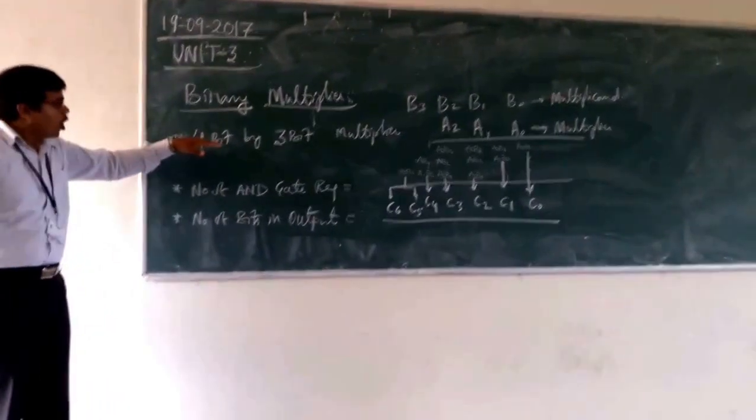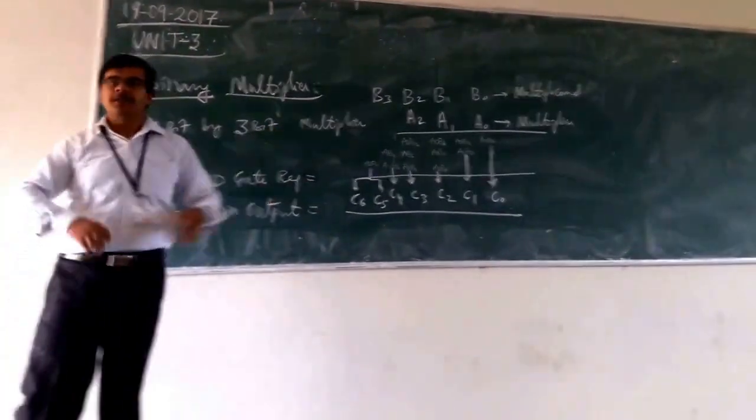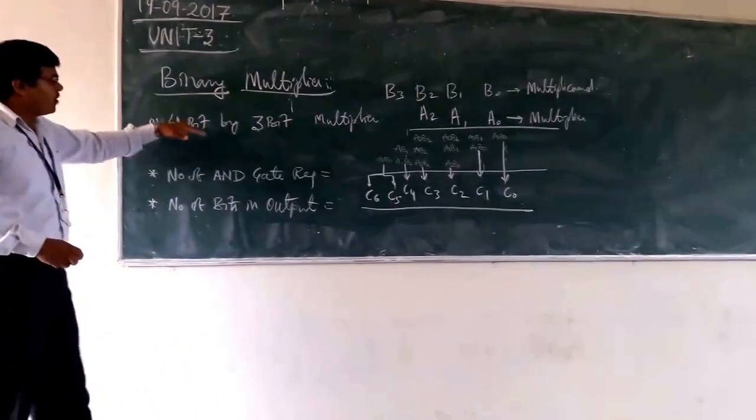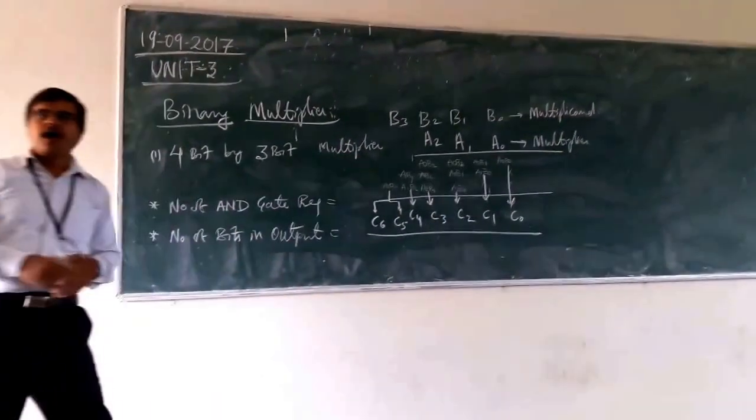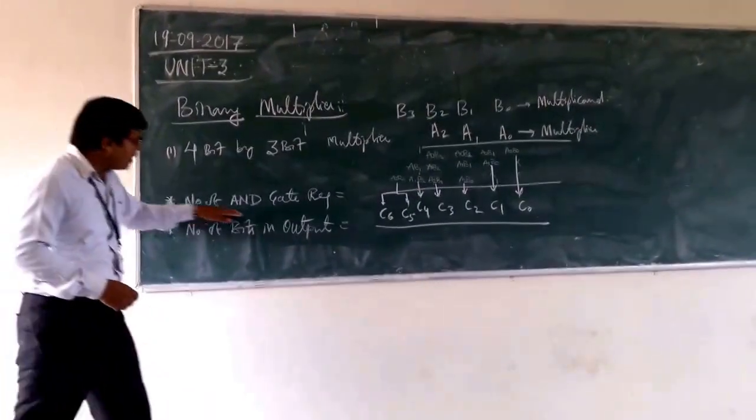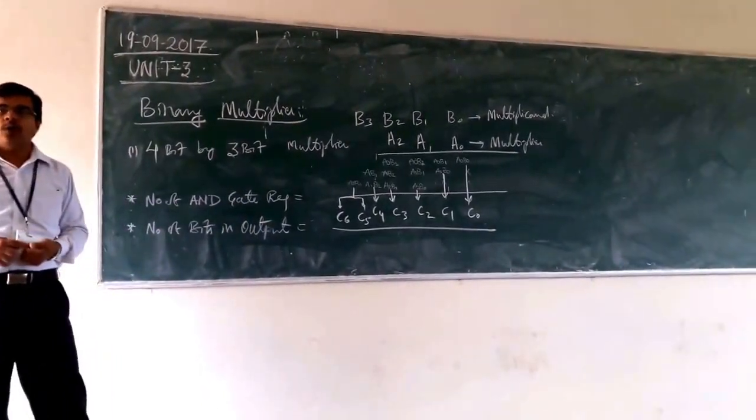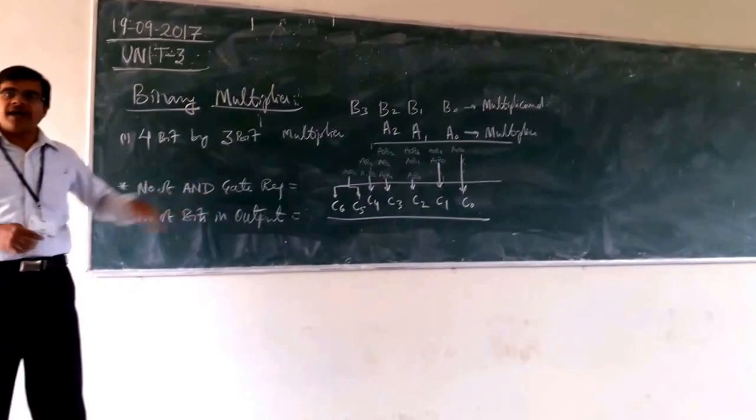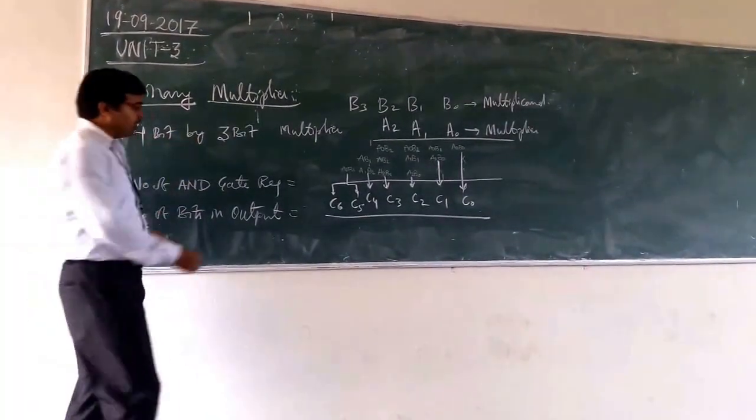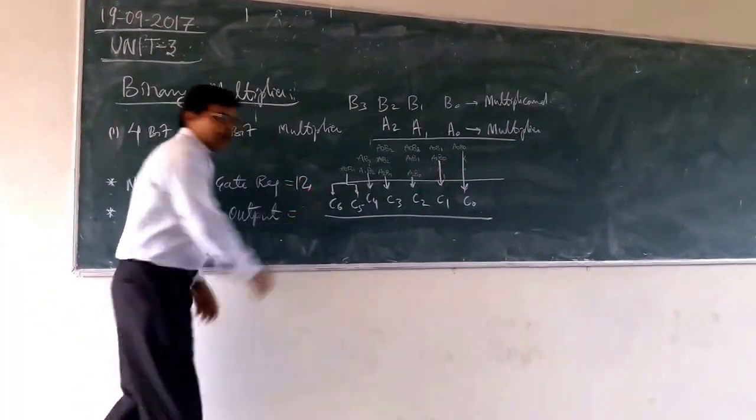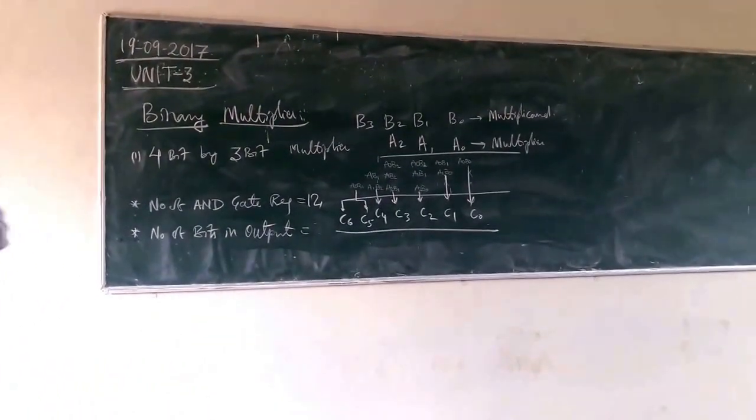We have to go for design of 4-bit by 3-bit multiplier. As we are going for 4-bit by 3-bit multiplier, first we should know what is the number of AND gates that is required. If you are going for finding the number of AND gates, the number of AND gates required will be 12. So 12 number of AND gates are required.